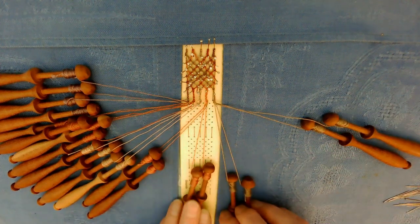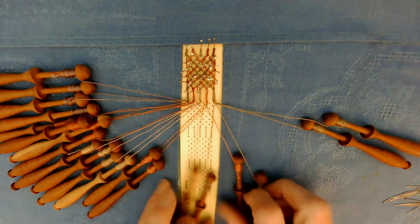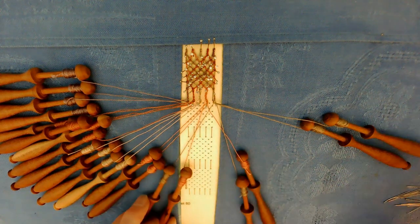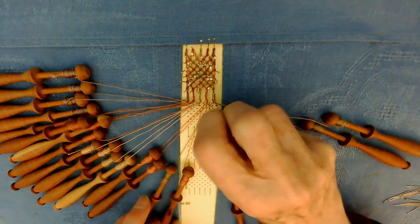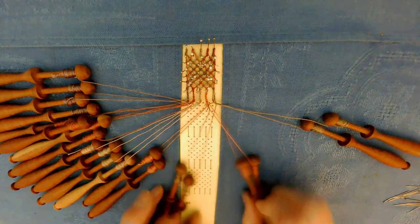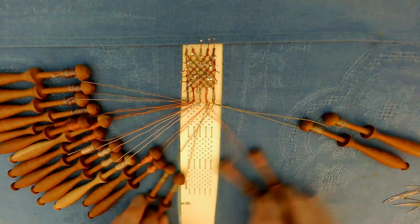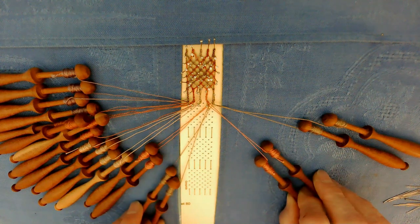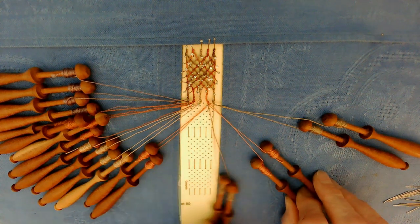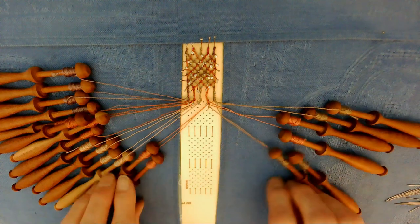Pick up the next two pairs. It's cross, twist, pin, cross, twist, twist. This will make a more square type of ground as compared to the last one. Move them to the side.